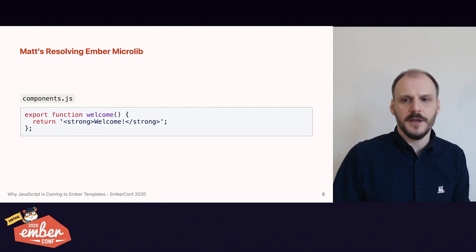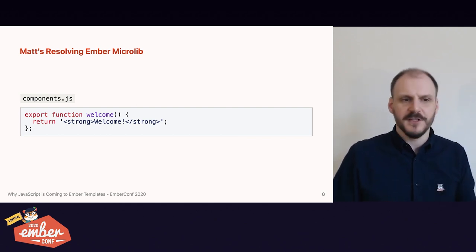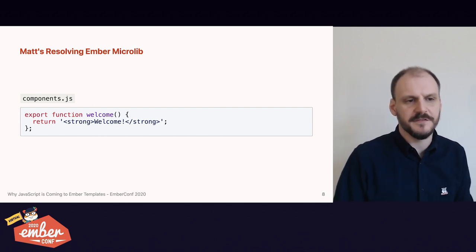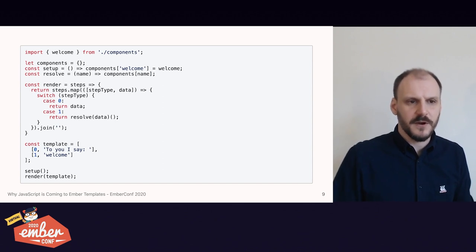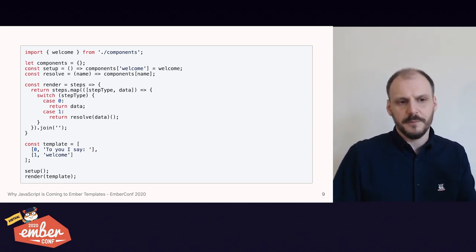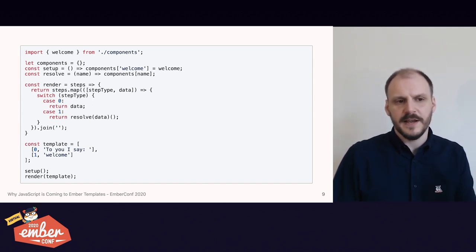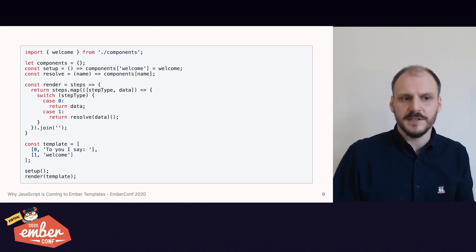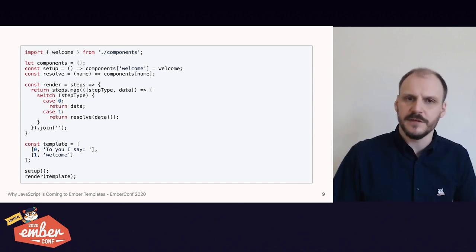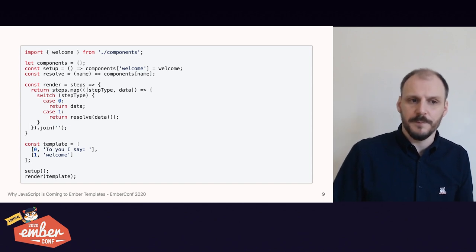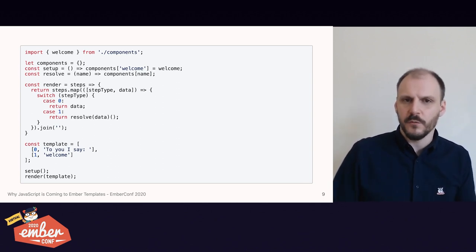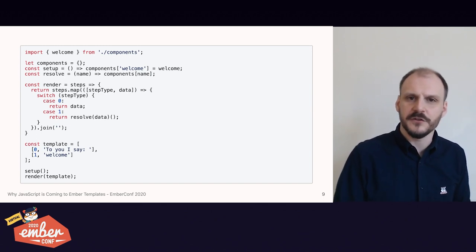To illustrate the problem with Ember's resolver system, let's build a little fork of Ember — I'll call it mats-resolving-ember-micro-lib. Here's a component in my framework; it's just a function that returns a string, in a file called components.js. In the framework code, we call a render function passing it a template. The template contains opcodes: opcode 0 means append text, and opcode 1 means invoke a component. On setup, we create a map of all our components and then render them.